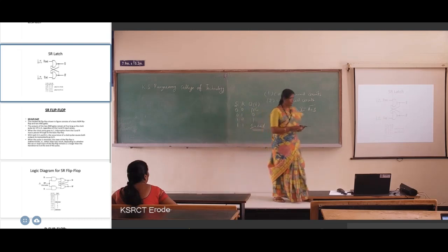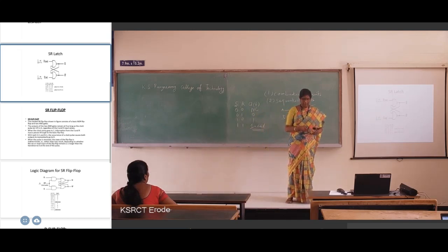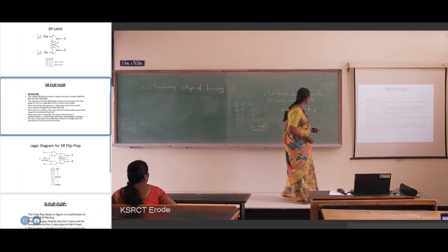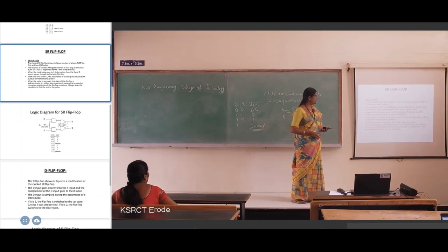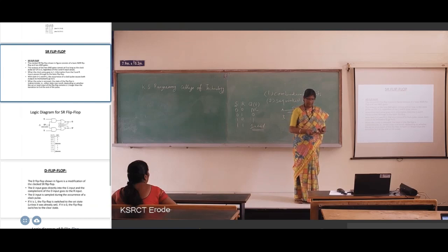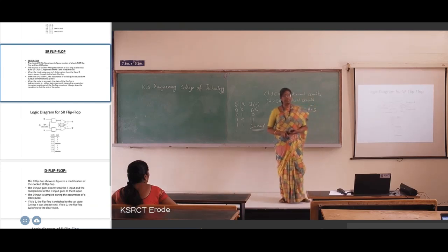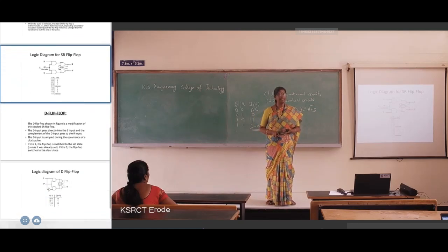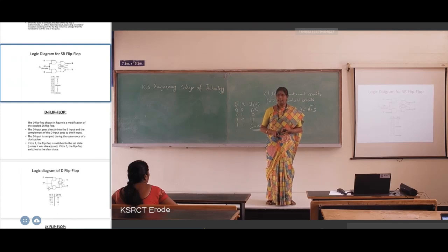Using this latch circuit, we are constructing the SR flip-flop. In this SR flip-flop, we are using the latch circuit with NAND gates. The two inputs are S and R, and we give a clock pulse to the SR flip-flop. The latch circuit has no clock pulse, but in the flip-flop we use clock signals. S and R inputs are connected by NAND gates, and the clock pulse is given to the NAND gates.